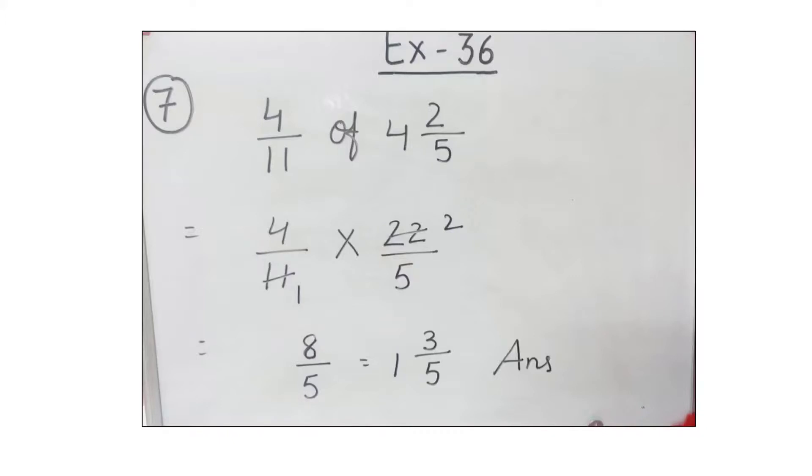Can we cancel 11 and 22? Yes, by table of 11: 11 ones are 11, 11 twos are 22. Now we have numerators 4 and 2. 4 times 2 is 8, and the denominator is 5, giving us 8 by 5. This is an improper fraction, so we convert it to a mixed numeral: 1 and 3 by 5 is the answer.